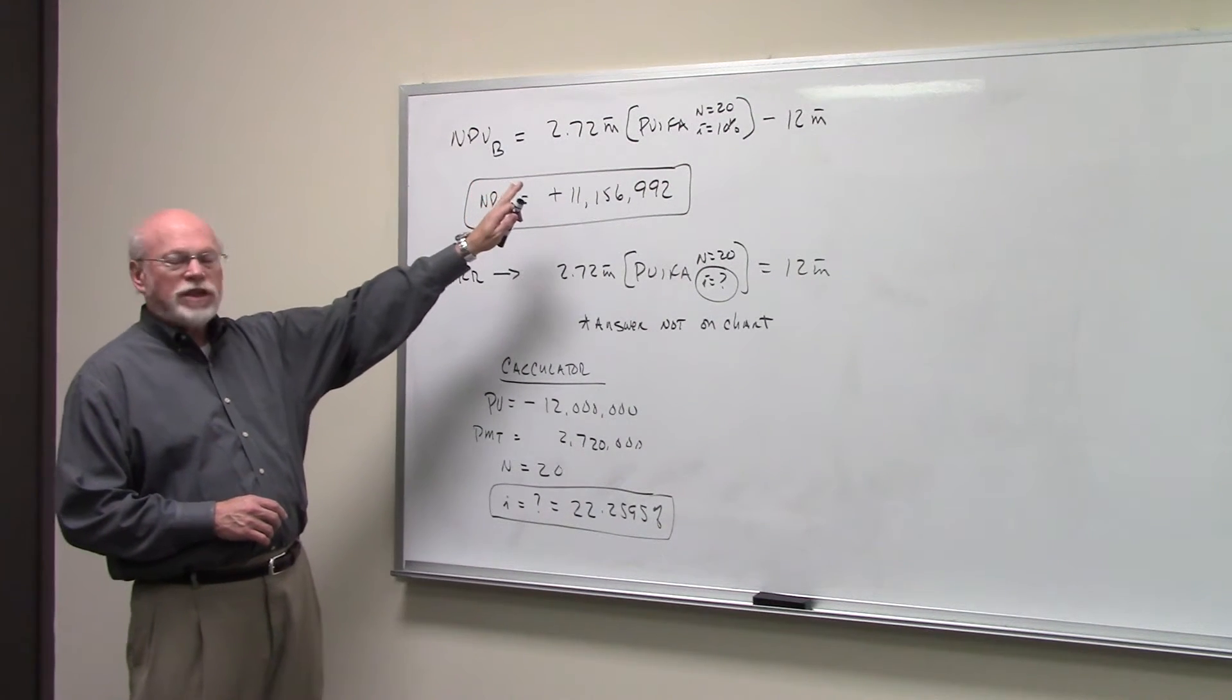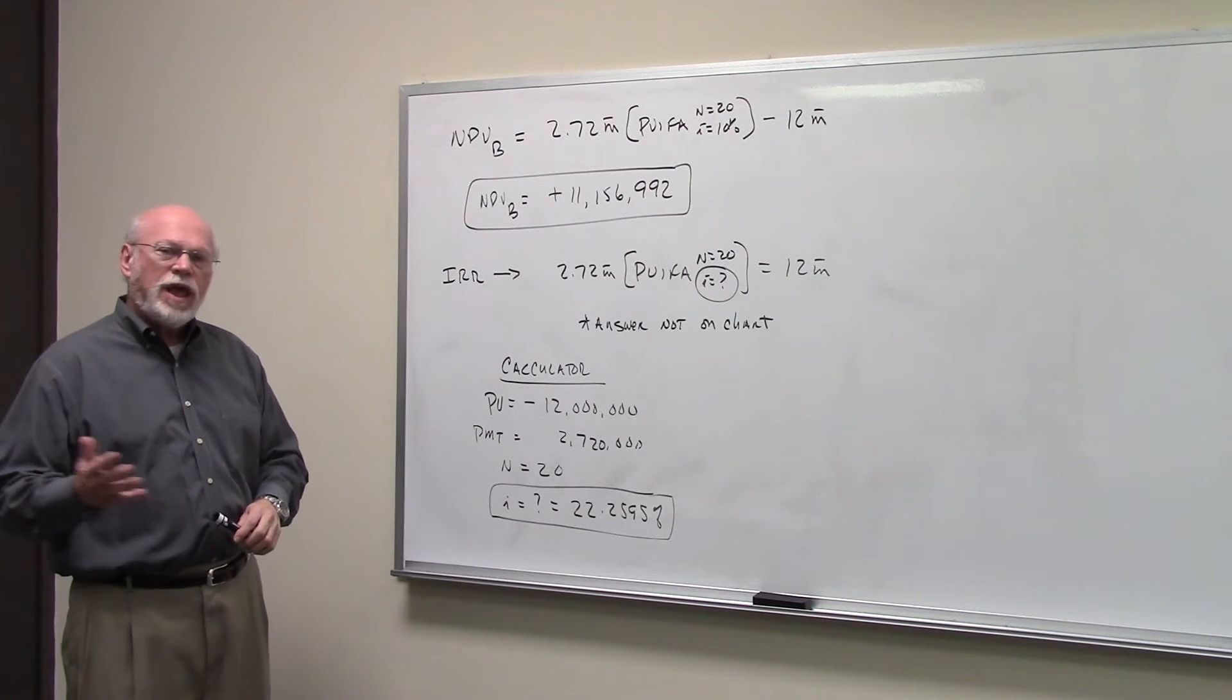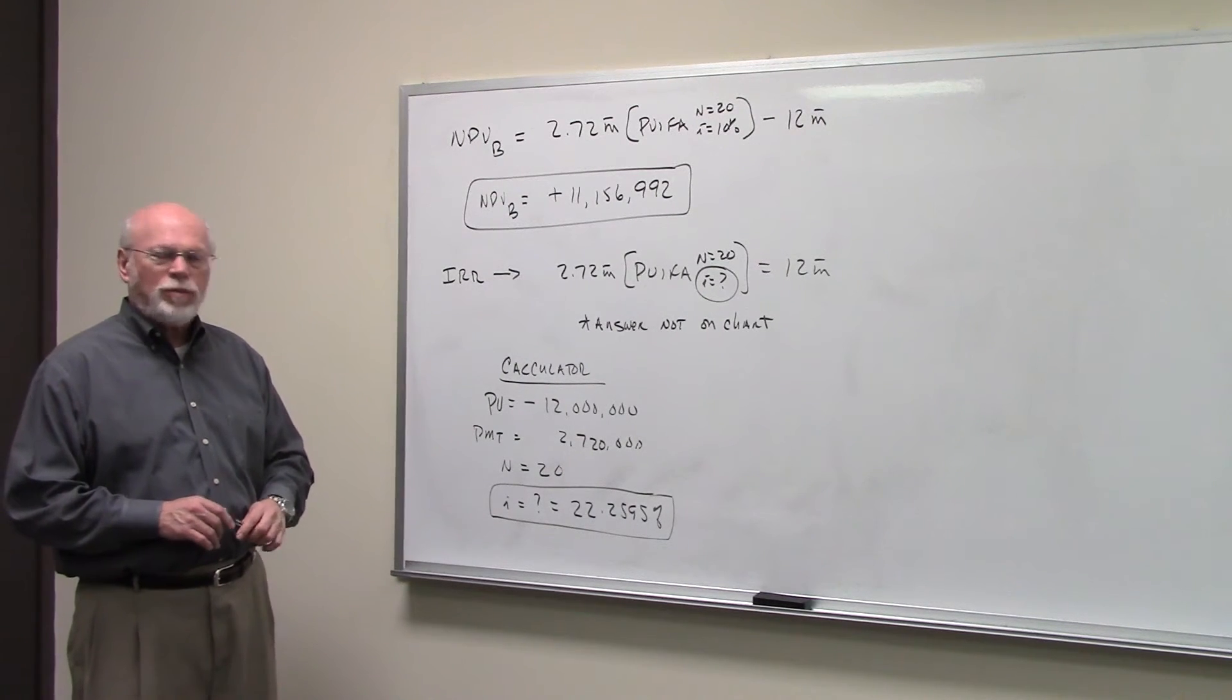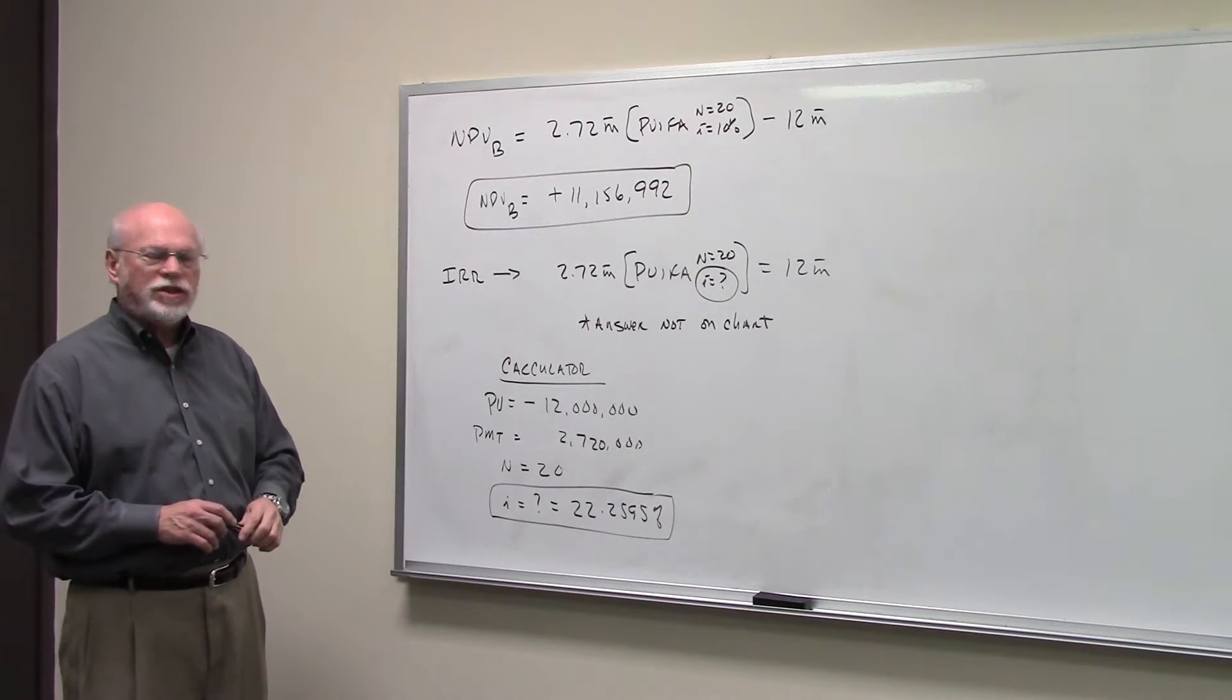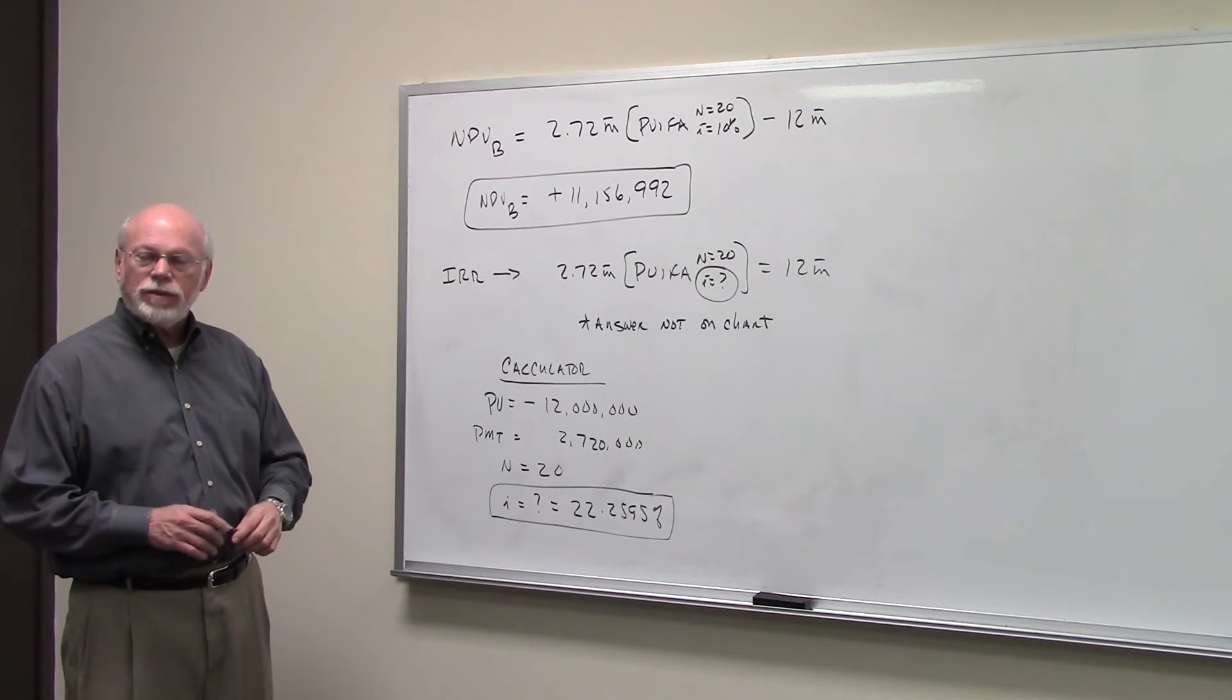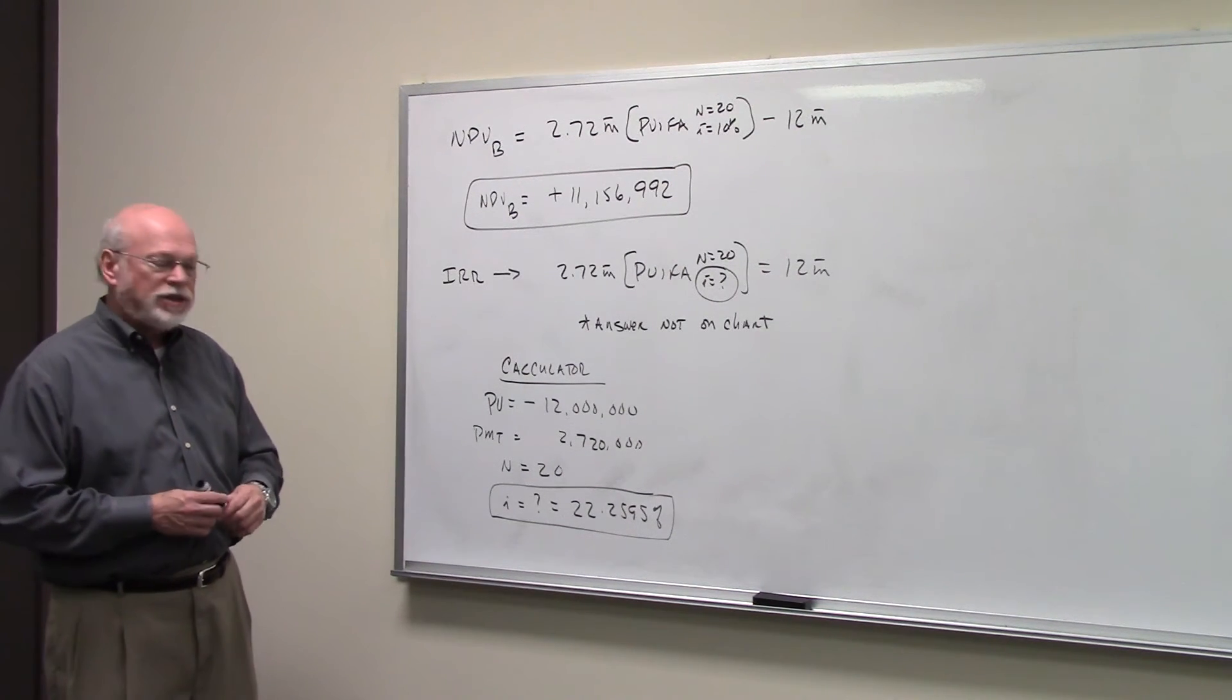$2.72 million times the PVIFA at 10% for 20 years gives us the present value of the cash inflows. Subtract from that $12 million, and you'll find the net present value for this project is a positive $11,156,992. So based on net present value, it would be an acceptable project.